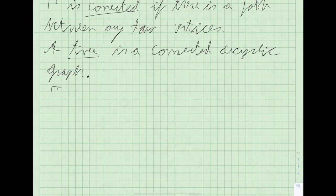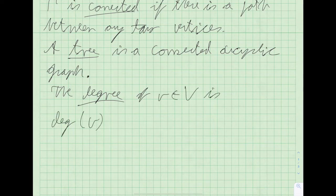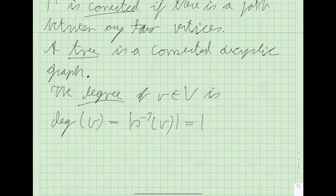The degree, or valency, of a vertex in our graph is, by definition, the number of edges connected to V. Since our graphs are undirected-directed, you can compute this as the size of the inverse image under S or R.